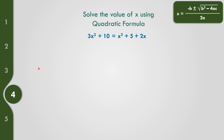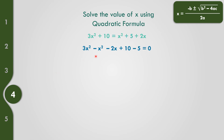Example number 4: 3x squared plus 10 equals x squared plus 5 plus 2x. This is not in standard form. Moving x squared plus 5 plus 2x to the left side and changing signs: 3x squared minus x squared minus 2x plus 10 minus 5 equals 0. Combining like terms: 3 minus 1 gives 2x squared, minus 2x, and 10 minus 5 gives positive 5, equals 0. So A equals 2, B equals negative 2, and C equals 5.